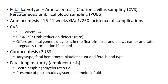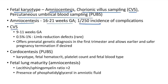Fetal karyotype can be obtained by amniocentesis, chorionic villus sampling (CVS), or percutaneous umbilical blood sampling (PUBS). Amniocentesis is done between 16 to 21 weeks; risk of complications is 1 in 250. CVS is done between 9 to 11 weeks; risk of complication is 0.5 to 1%. A rare complication of CVS is limb reduction defects. CVS offers prenatal genetic diagnosis in the first trimester, allowing earlier and safer pregnancy termination if desired.